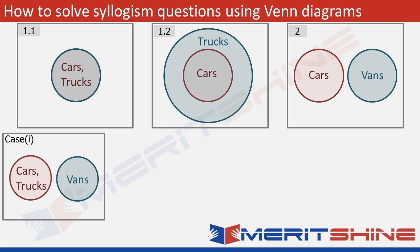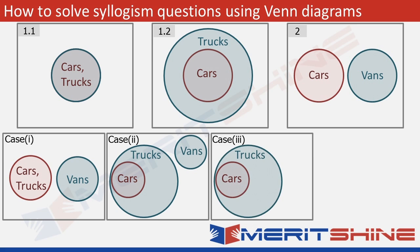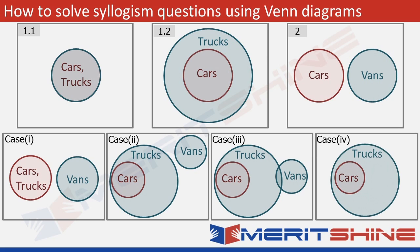Now let's combine 1.2 and 2. In case 2, using figure 1.2, vans can be placed completely outside trucks — no intersection with cars or trucks. But that's not the only possibility. In case 3, vans can partially overlap with trucks, giving some intersection between trucks and vans, while still not overlapping with cars. This does not violate any condition. There is also a fourth case: vans can be placed entirely inside trucks, meaning all vans are contained within trucks — which is also valid.